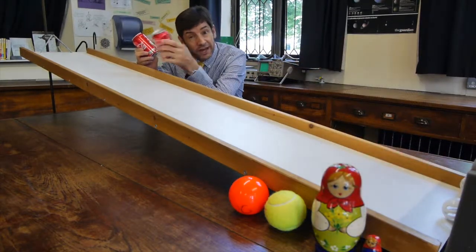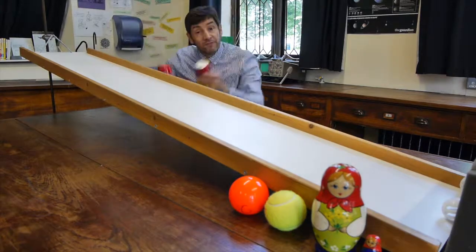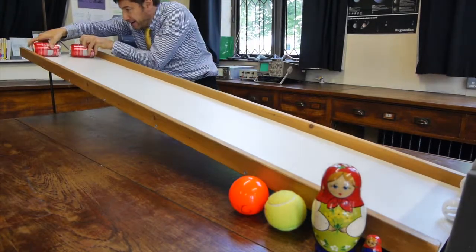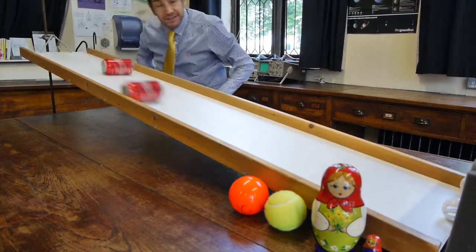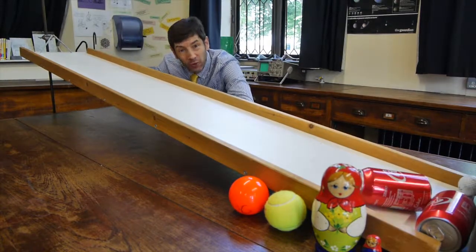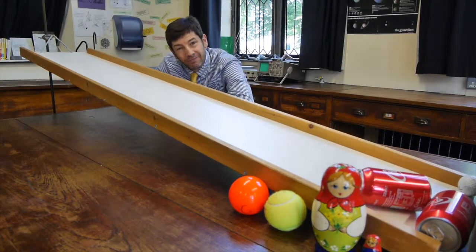So you can't tell which Coke can is empty and which is full by dropping them vertically, but you can by rolling them down a slope. The full one will always get to the bottom first.